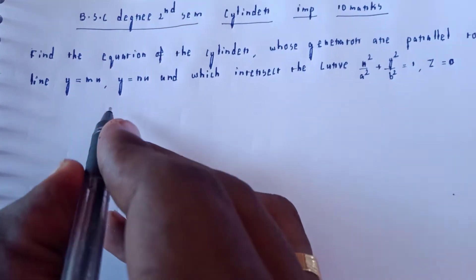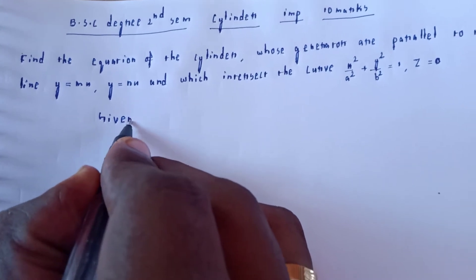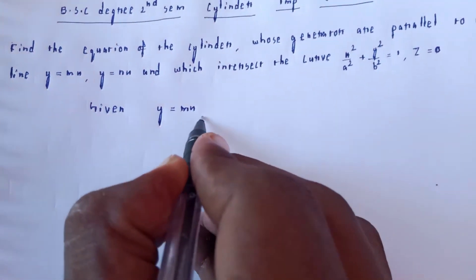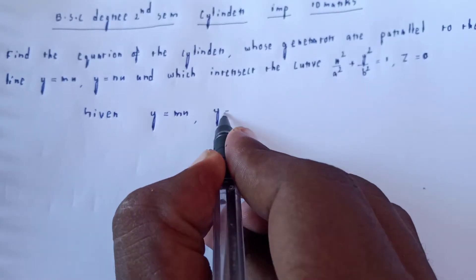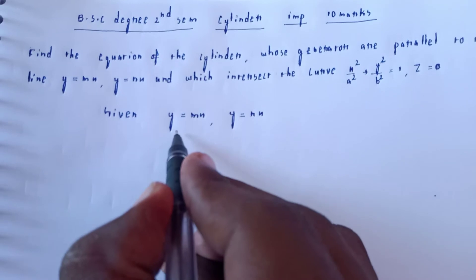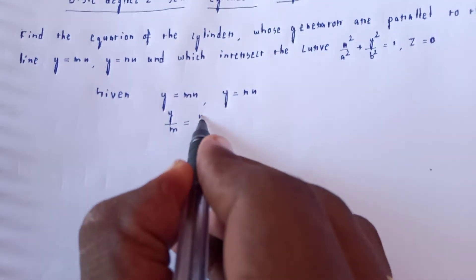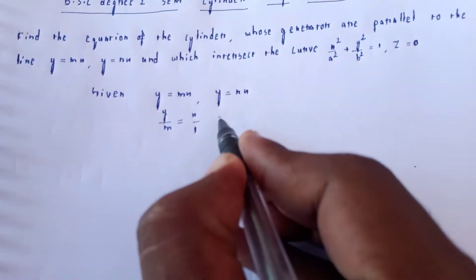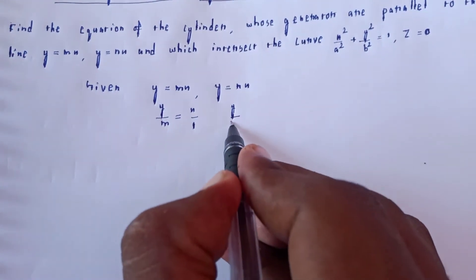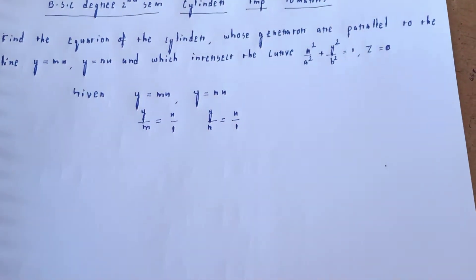The given lines are y equal to mx and y equal to nx. From these, we get y by m equal to x and y by n equal to x, giving direction ratios for the generator lines.